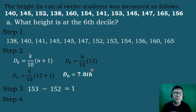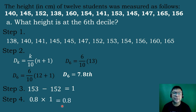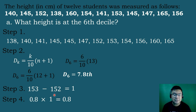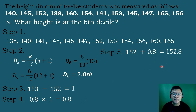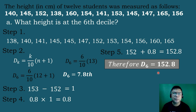For step 4, we multiply the decimal part of the result in step 2 — which is 0.8 — times the result in step 3, which is 1. So 0.8 times 1 equals 0.8. For the last step, we add the 7th number, which is 152, plus 0.8, which equals 152.8. Therefore, Decile 6 equals 152.8. This means 60% of the heights of the 12 students is less than or equal to 152.8.